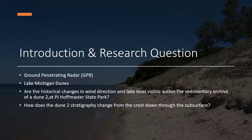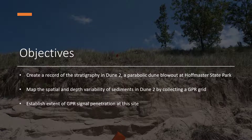This study was conducted to investigate paleo wind directions and overall stratigraphy recorded in the sedimentary archive of a dune at PJ Hoffmaster State Park. The objectives of the study were: create a record of the stratigraphy in Dune 2, a parabolic dune blowout at Hoffmaster State Park; map the spatial and depth variability of sediments in Dune 2 by collecting a GPR grid; and establish the extent of GPR signal penetration at this site.